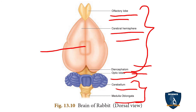By seeing the diagram you can confirm: the forebrain, or prosencephalon, consists of olfactory lobes, cerebral hemispheres, and diencephalon — all in pairs and connected by corpus callosum. The midbrain, or mesencephalon, consists of optic lobes. The hindbrain, or rhombencephalon, consists of cerebellum, pons variolae, and medulla oblongata.